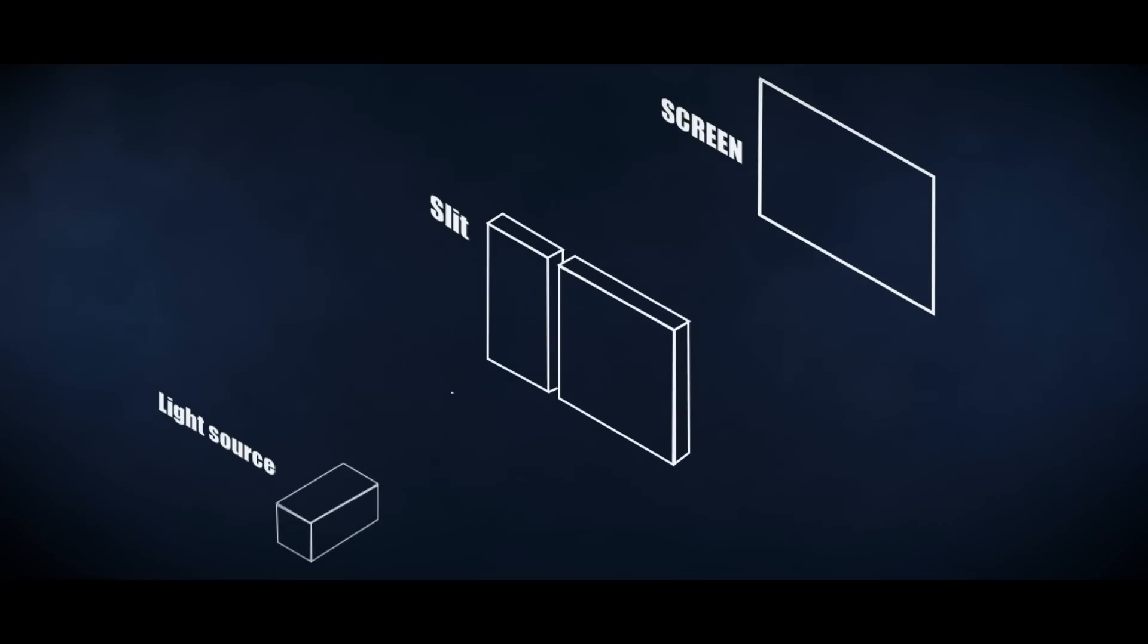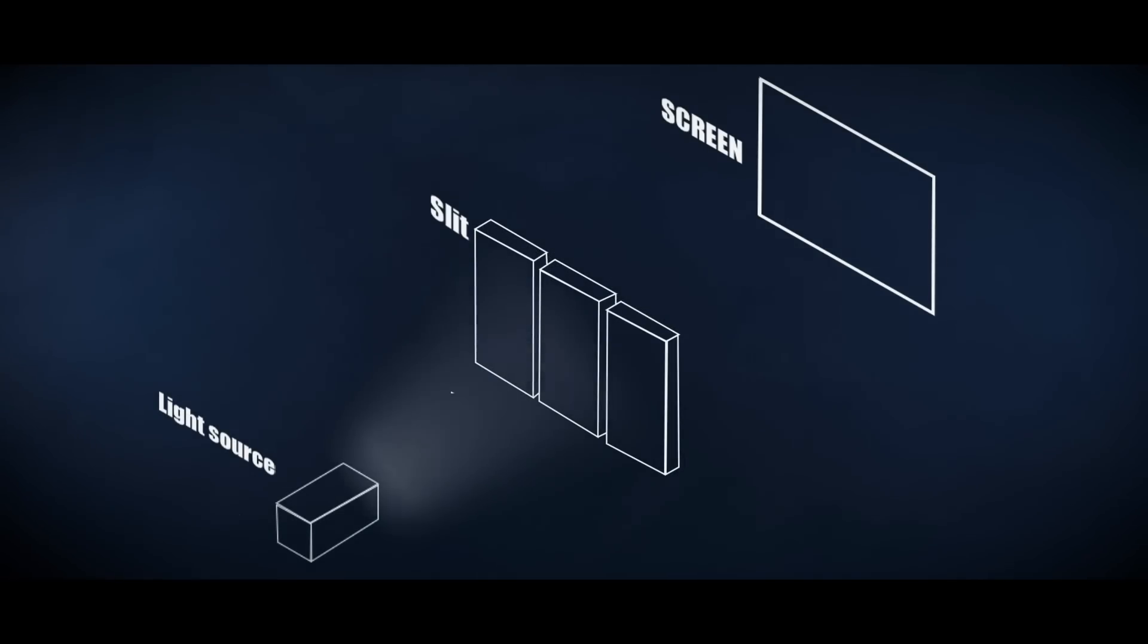Back to the experiment. We make another slit in the plate and illuminate both slits with a single light source. Photons pass through the two slits, and two straight lines should appear on the screen behind them, right? Well, not quite. The rear screen shows dark and light streaks, not the sharp lines we would expect from a stream of particles. What does this mean?